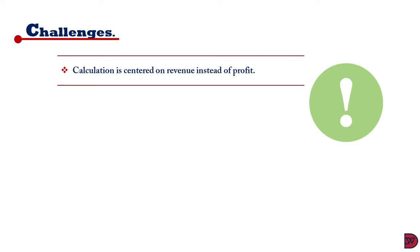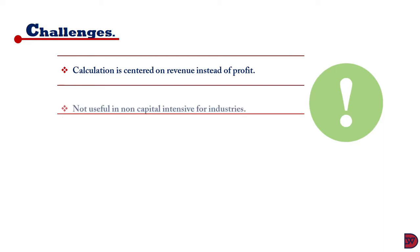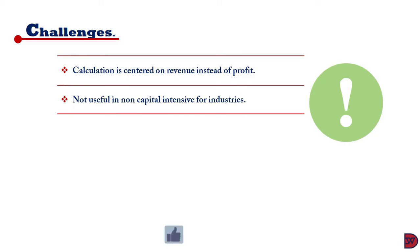There are certain challenges with the non-current asset turnover ratio. The first is that the calculation is centered on revenue instead of profit, which gives room for manipulation — for example, credit sales being offered at higher than stipulated rates instead of cash sales. With credit sales, many businesses will come in to buy, increasing revenue without necessarily generating the cash the business needs to survive.